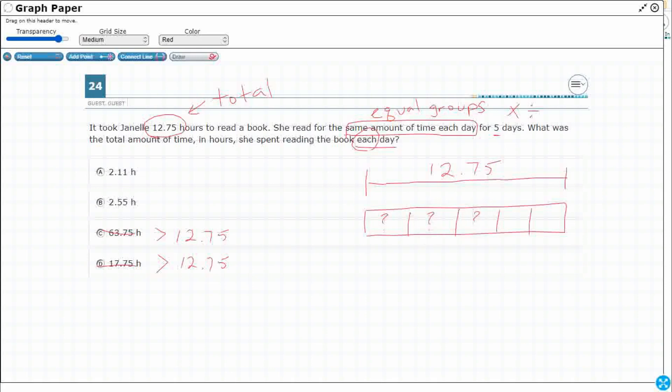Alright. So when we set it up like this, it looks pretty simple. We are going to divide. We're going to divide our 12.75, divide that by five. Let's go ahead and do this with a little bit of long division.